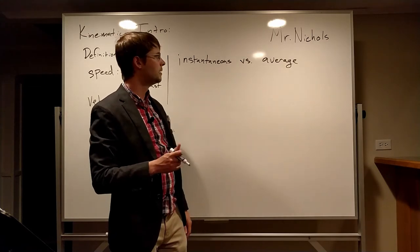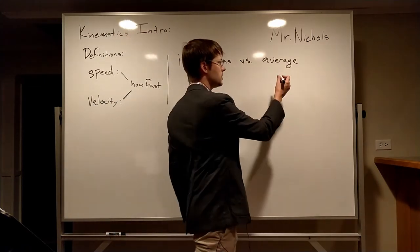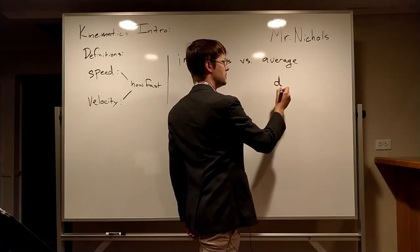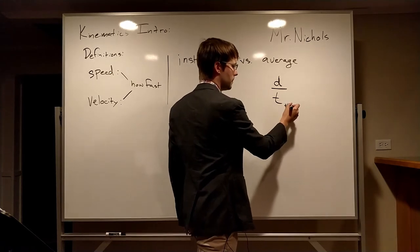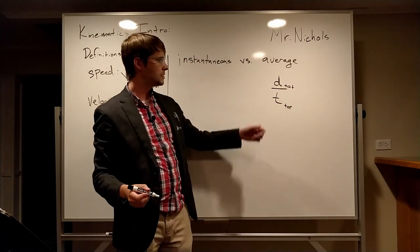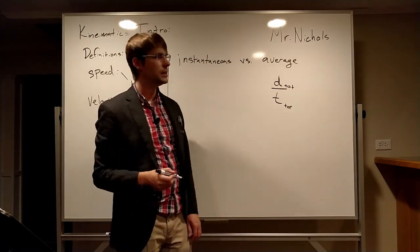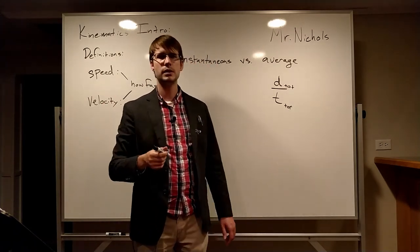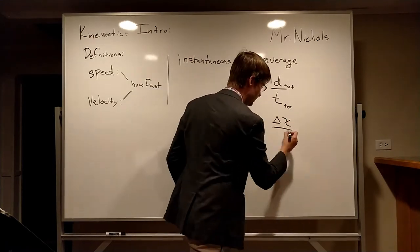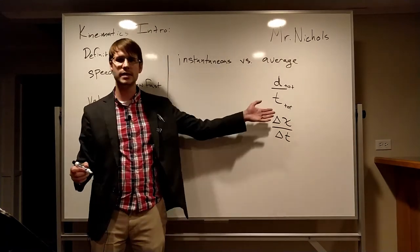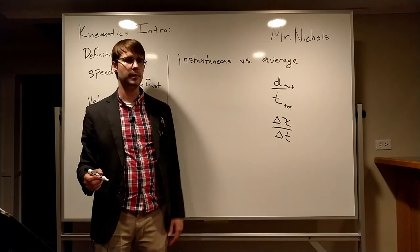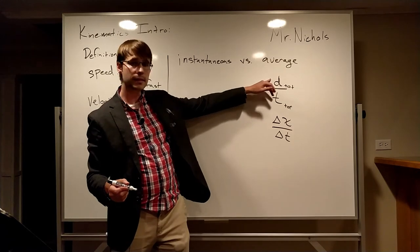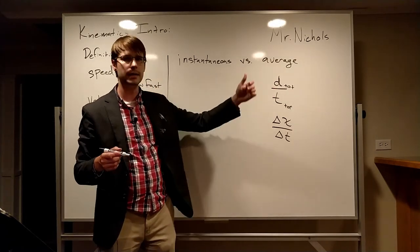So let's look real quick at how we can figure these out. Average you can calculate by looking at the distance over the total time. So total distance divided by total time is going to give you the average speed. If you want to find the average velocity, then you're just going to do delta x over delta t. Divide the total displacement by the total time. Displacement is a vector so this whole thing becomes a vector. Distance is a scalar so the whole thing is a scalar.